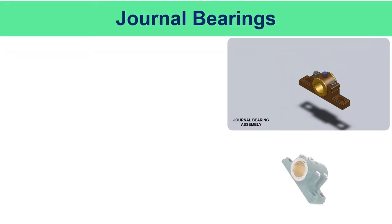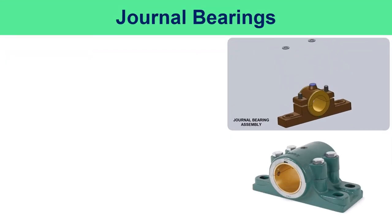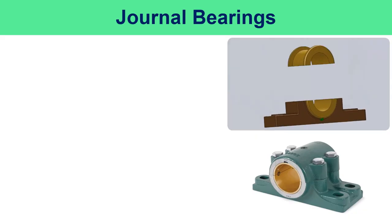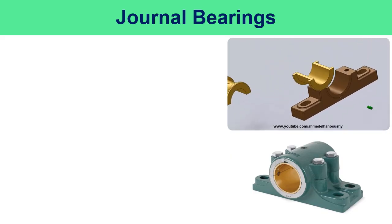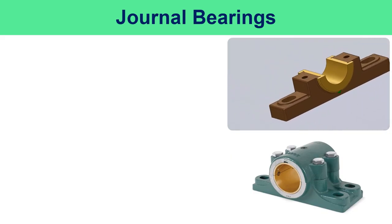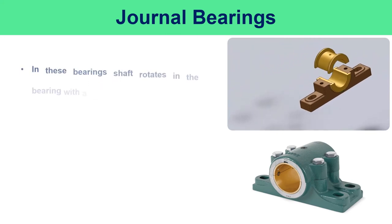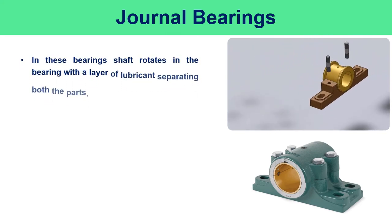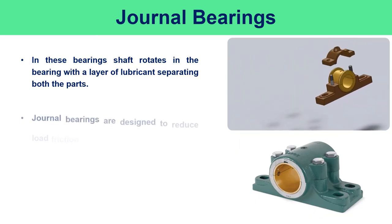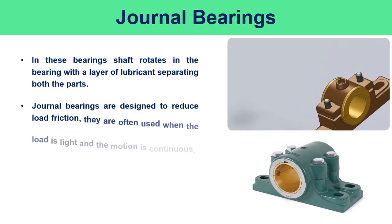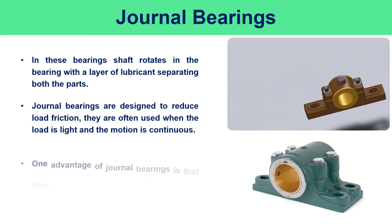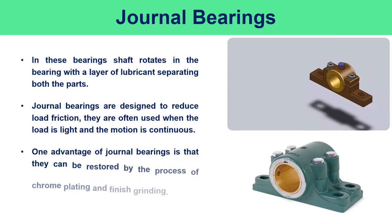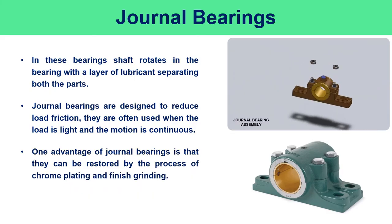Journal bearings encompass sleeve, plain, shell, and babbitt bearings. The term 'babbitt' refers to layers of softer metals such as lead, tin, and copper that form the metal contact surface of the bearing shell. In these bearings, the shaft rotates in the bearing with a layer of lubricant separating both parts. Journal bearings are designed to reduce load friction and are often used when the load is light and the motion is continuous. One advantage is that they can be restored by chrome plating and finish grinding.